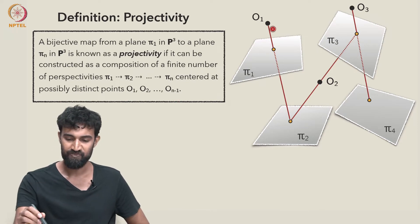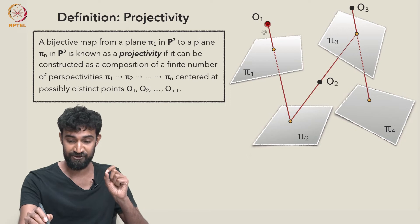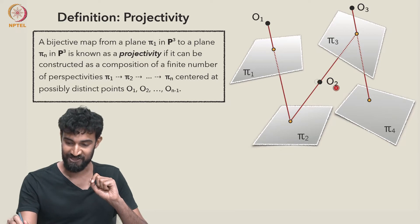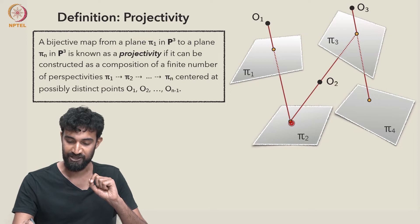So in this image here, we have a perspectivity centered at O₁ mapping from π₁ to π₂, followed by a perspectivity centered at O₂, which takes the plane π₂ to the plane π₃, and it takes this point to this point,